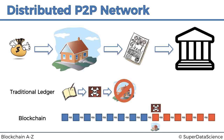We left off last time when we discussed the example of property ledgers — the traditional approach versus the blockchain approach — and how the blockchain can add more protection and make the whole ledger immutable, making it very difficult for somebody to change previous records in the ledger and therefore making it more reliable.